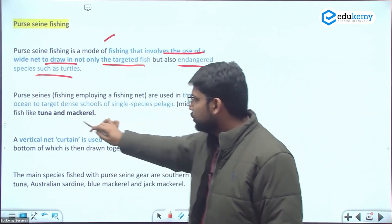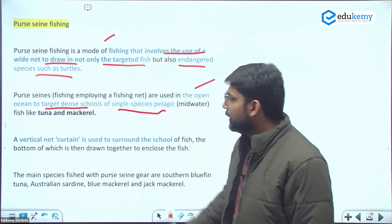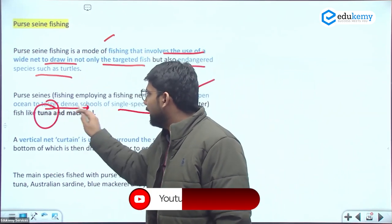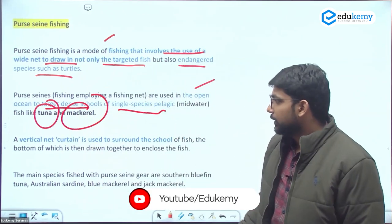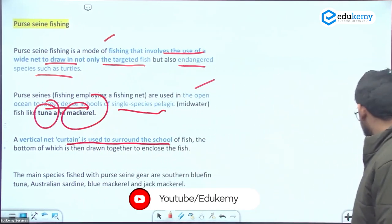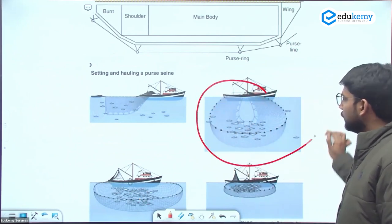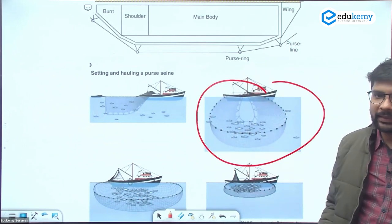It's fishing using the open ocean to target dense schools of single species pelagic fish like tuna and mackerel. A vertical net curtain is used to surround the schools. I'll show you the technique - we're surrounding a curtain type with boats, creating an area that will capture all species in that area, including endangered species.